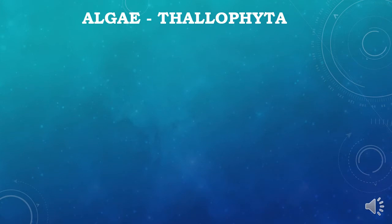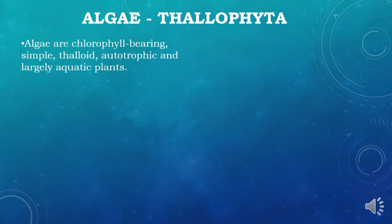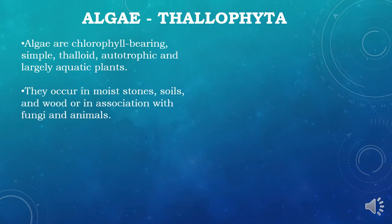Coming to the first division — algae, which belongs to Thallophyta. The name Thallophyta is because the body is slender and thallus-like, with no distinct shapes. Algae are chlorophyll-bearing, simple, thalloid, autotrophic and largely aquatic plants. They are autotrophic, capable of producing their own food as they contain chlorophyll pigment. They undergo photosynthesis and fix carbon dioxide to produce carbohydrates such as starch. They occur on moist stones, soils, and wood, or in association with fungi and animals, and may be autotrophic or symbiotic in nature.